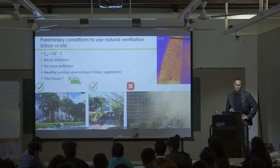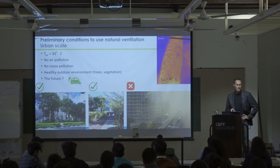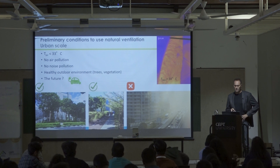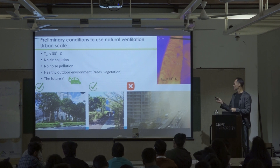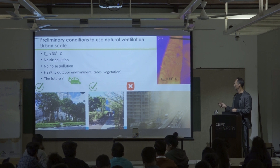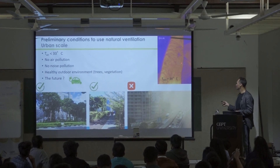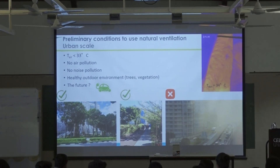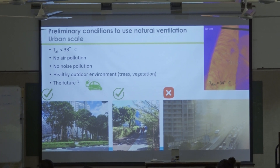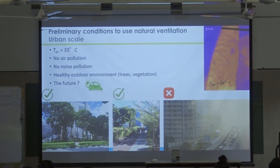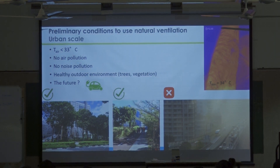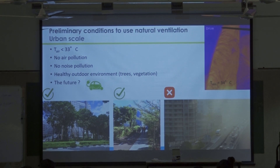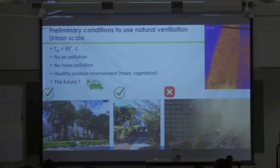As I said during my keynote speech, the temperature of the skin — this is an infrared picture of my home — is 33.3 or 34 degrees. That means to remove heat from the air around me, my environment must be at a temperature below 33 degrees. Of course you need to have no air pollution, no noise pollution, so you have a very healthy environment.